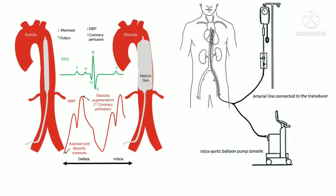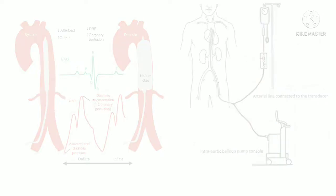This computer console has a mechanism of inflating and deflating the balloon at the proper time when the heart beats. The balloon catheter is inserted into the aorta through the femoral artery up to the descending aorta, and the lower end of the balloon is capped just above the renal artery.